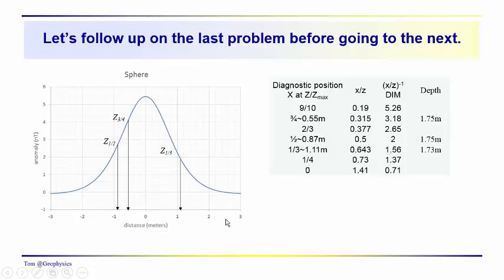I reduced the extent of the anomaly here from minus 3 to 3 meters. So it's a fairly localized anomaly. But you should have gotten this depth, 1.75 meters. Hopefully that worked out for you.